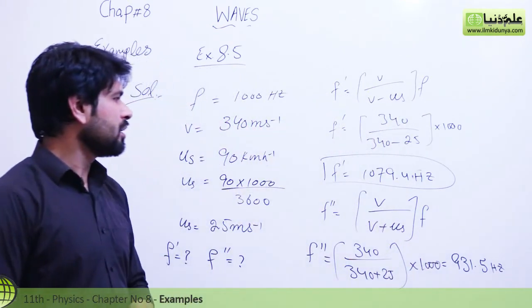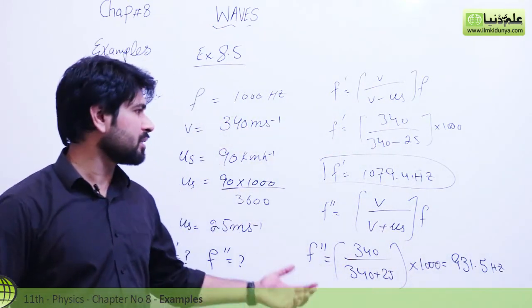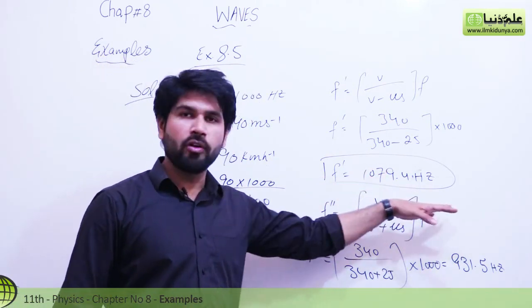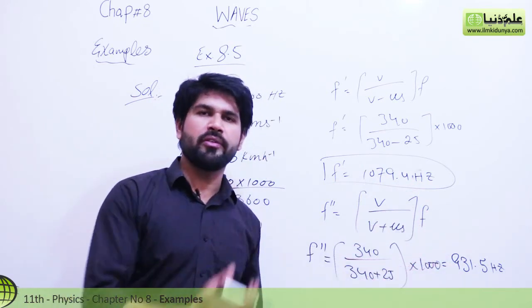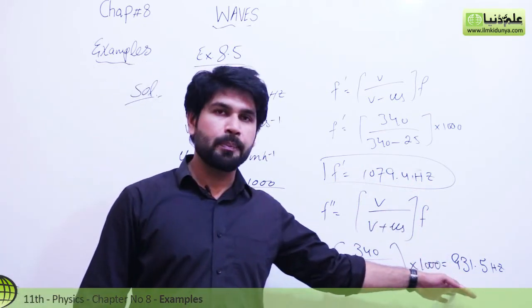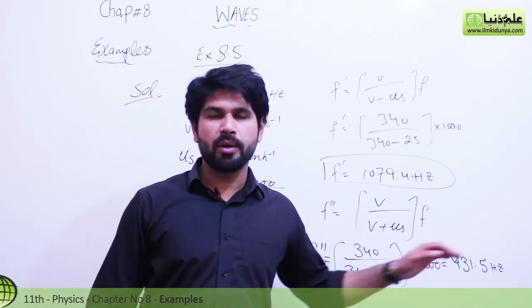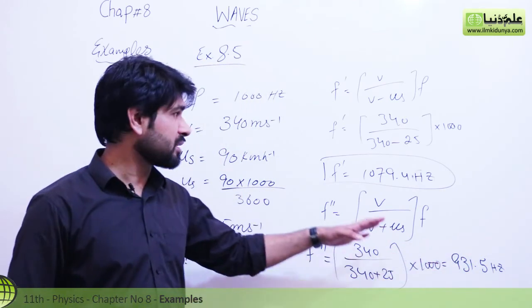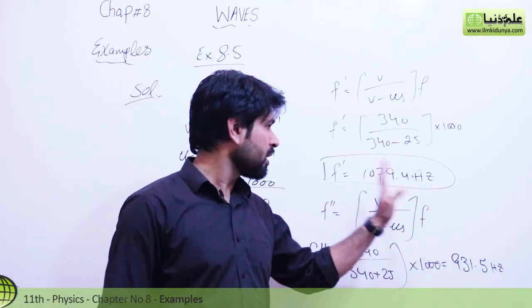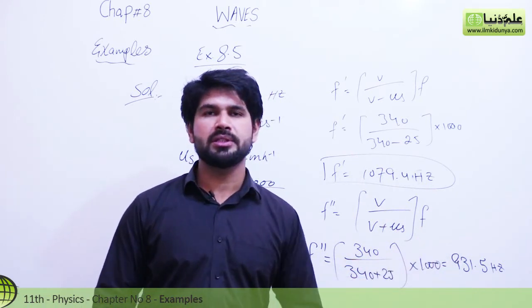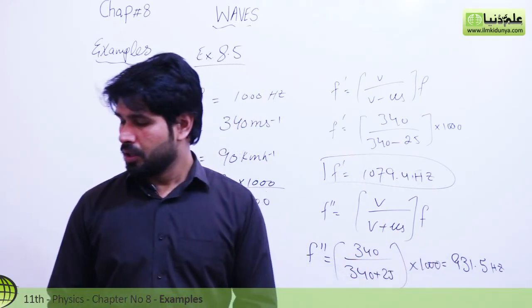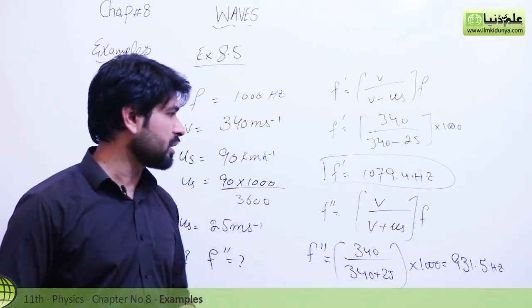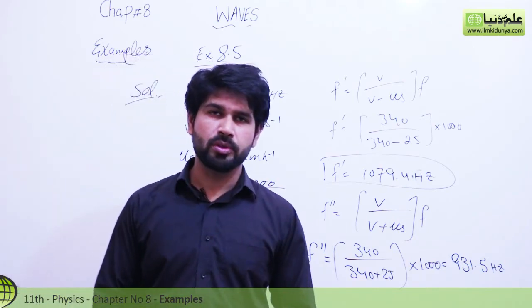When the train is approaching the listener, the apparent frequency is 1079.4 Hz, and when the train is moving away, the apparent frequency is 931.5 Hz. There is a noticeable difference between these two frequencies — this apparent change is explained by the Doppler effect, and in this way we can estimate whether the source is approaching or moving away.